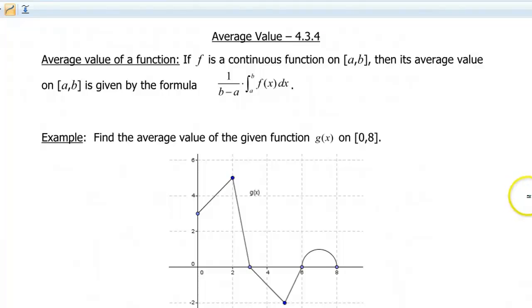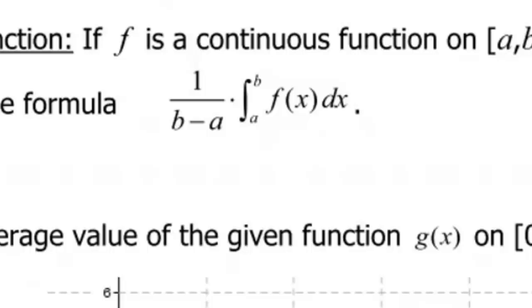Hello, and welcome to a screencast about finding the average value of a function. So we have a definition here. It says if f is a continuous function on the interval from a to b, then its average value on that interval from a to b is given by the formula 1 over b minus a times the integral from a to b of f(x) dx.